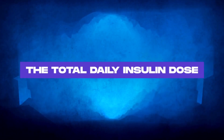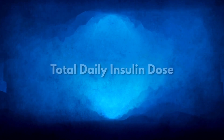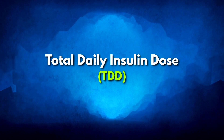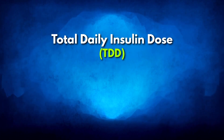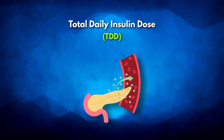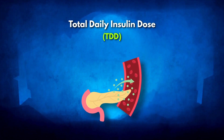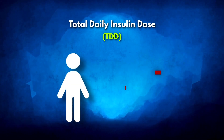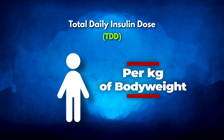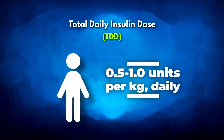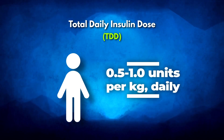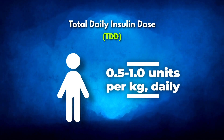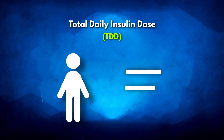The total daily insulin dose, or TDD, is a method to determine how much insulin you need in a day to keep your blood glucose levels in check. It is calculated per kilogram of body weight, with a recommended range usually between 0.5 to 1 units of insulin per kilogram daily.